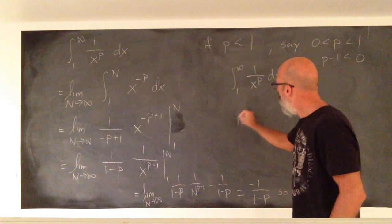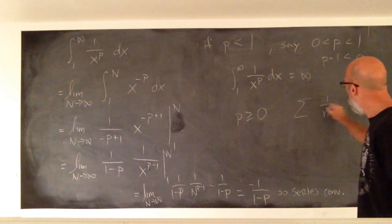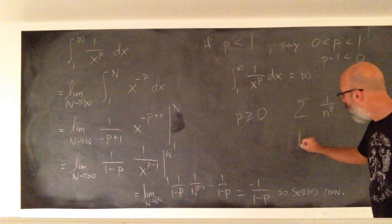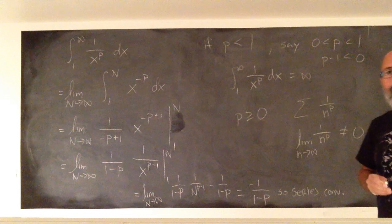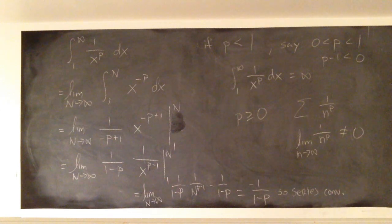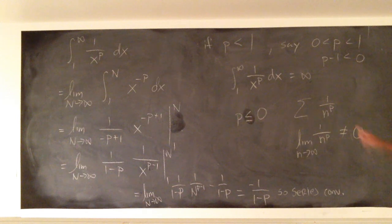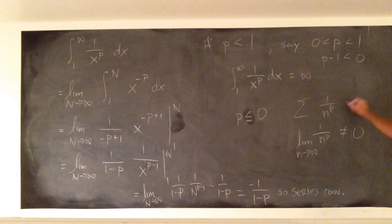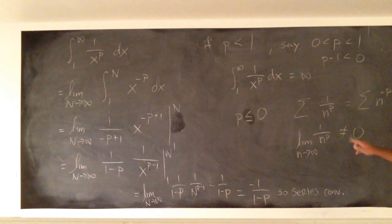And finally, what happens if p is less than or equal to 0? Well then your term does not have a limit of 0, so the series diverges by the divergence test. If p is a negative exponent, then negative p is going to be positive, so this is really n to a positive number, and the limit is going to be infinity.